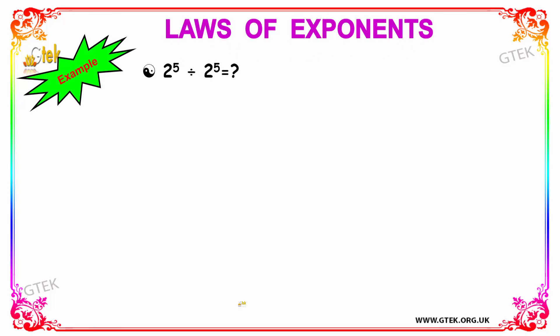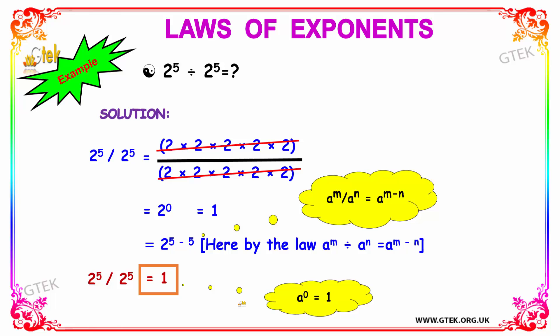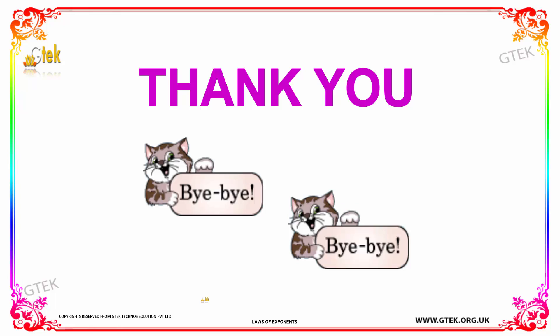Let's see another example: 2 to the exponent 5 divided by 2 to the exponent 5. Since the numerator and denominator are equal and the same, it is simply cancelled, so we get an answer of 1. As per the law of exponents, base a to the power 0 equals 1, since the exponent 5 minus 5 equals 0.